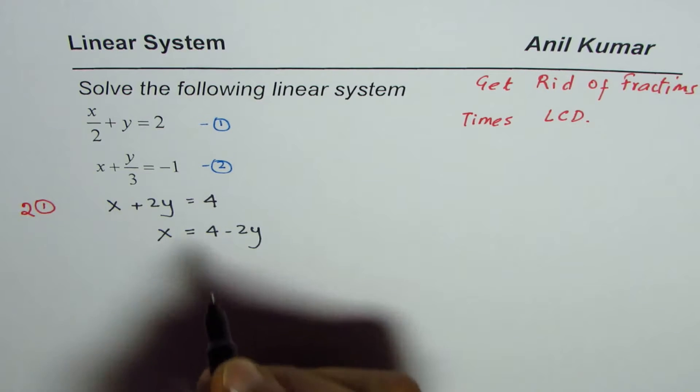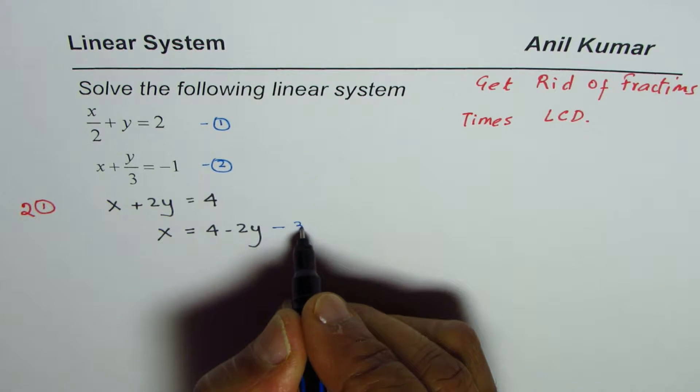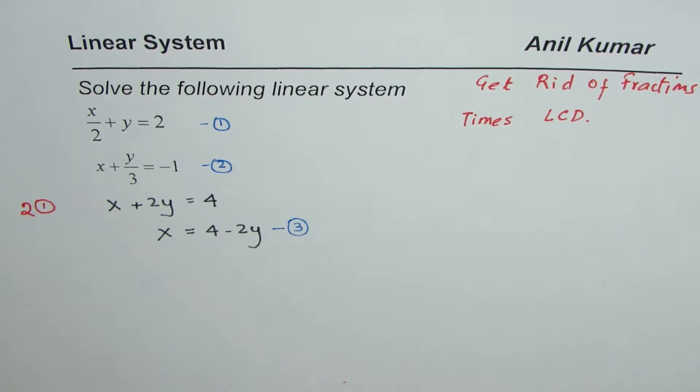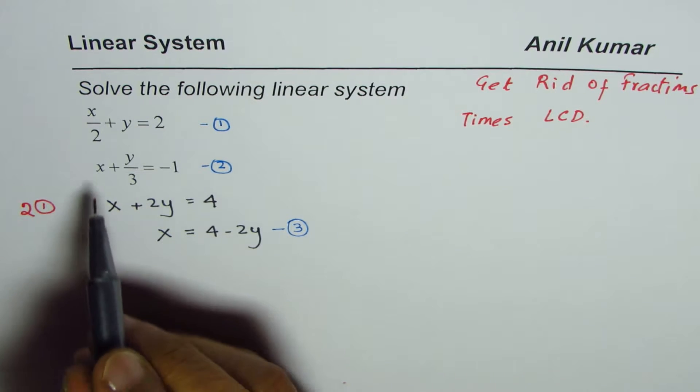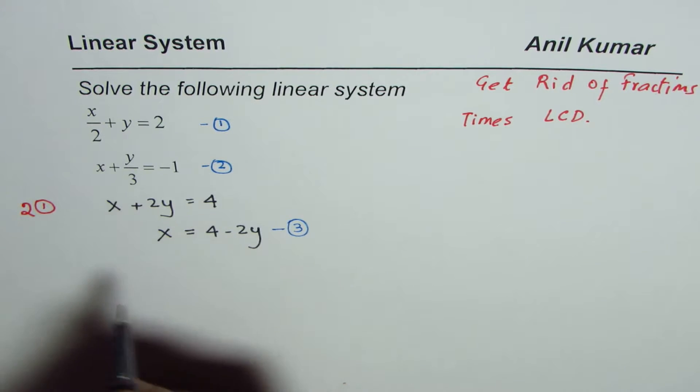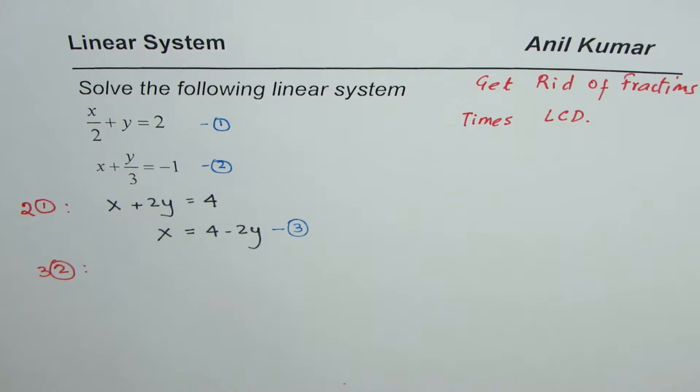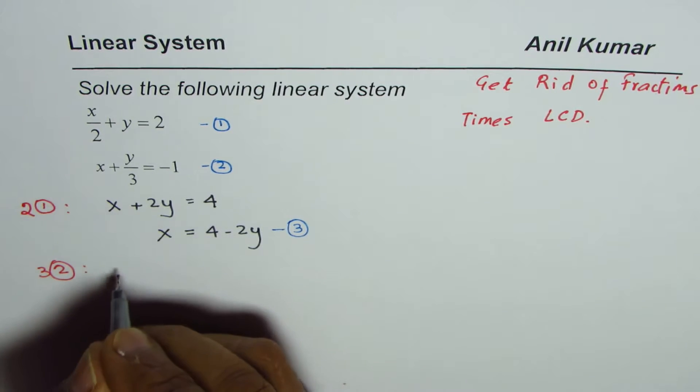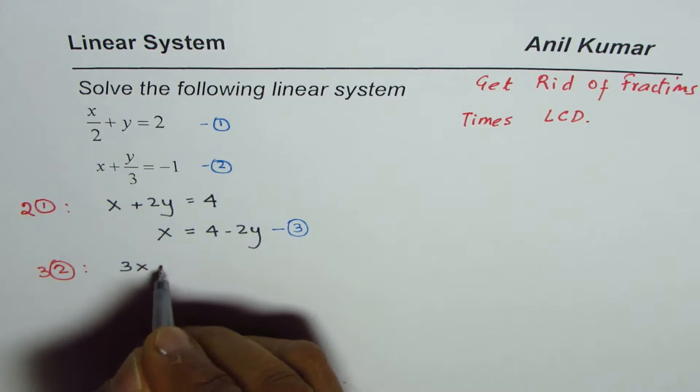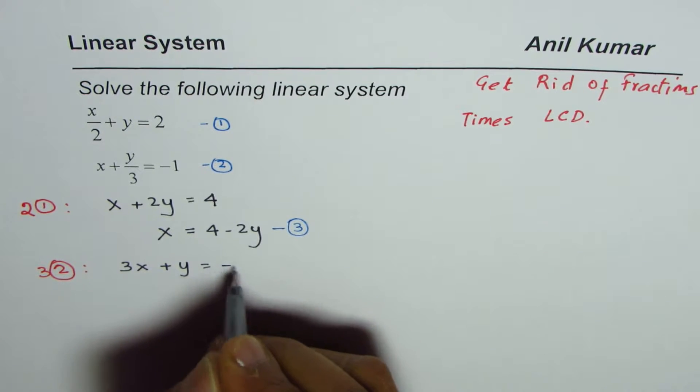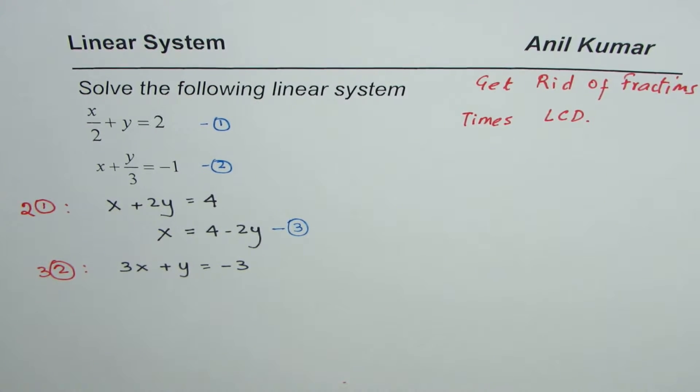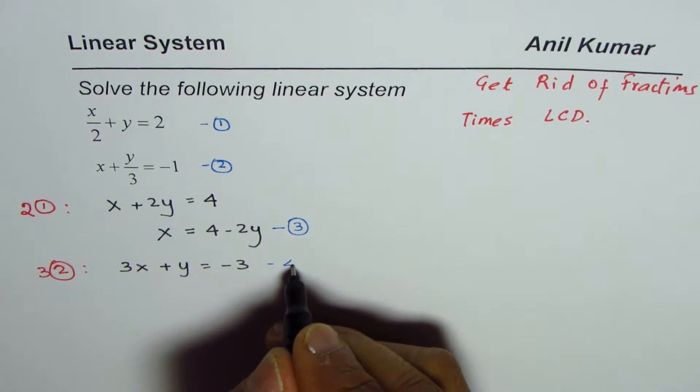Now let's work with the second equation. To get rid of fraction we need to multiply this by three. So we'll do three times equation two and once you do that you get 3x plus y equals minus 3. Let's call this equation number four.